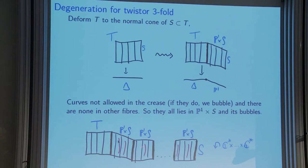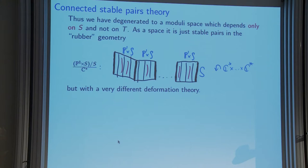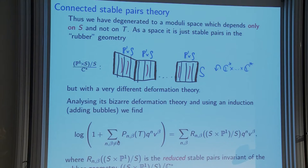You can use localization in the C direction. The first thing that's happened is we've degenerated to a moduli space that really depends only on S. All these curves are far from the rest of the twistor threefold. So even though stable pairs thicken and stick out into the twistor threefold, this invariant only depends on S. We're computing curves in this relative geometry — what people in this area call rubber because of all the C* actions. We're effectively computing curves on P1 × S relative to boundary divisors, but the fact that the twistor threefold is attached changes the deformation theory.